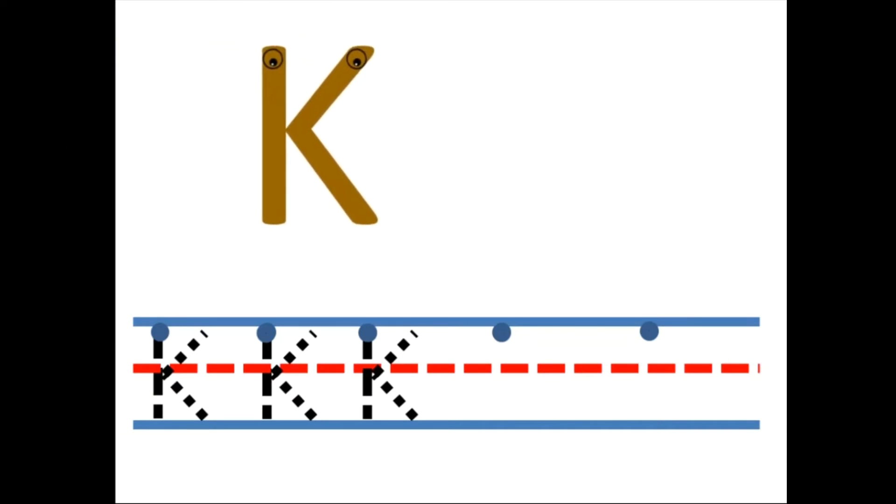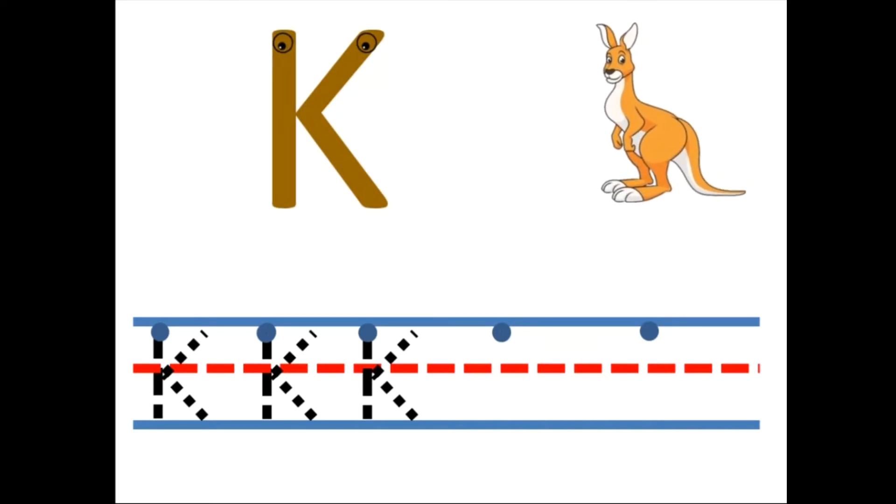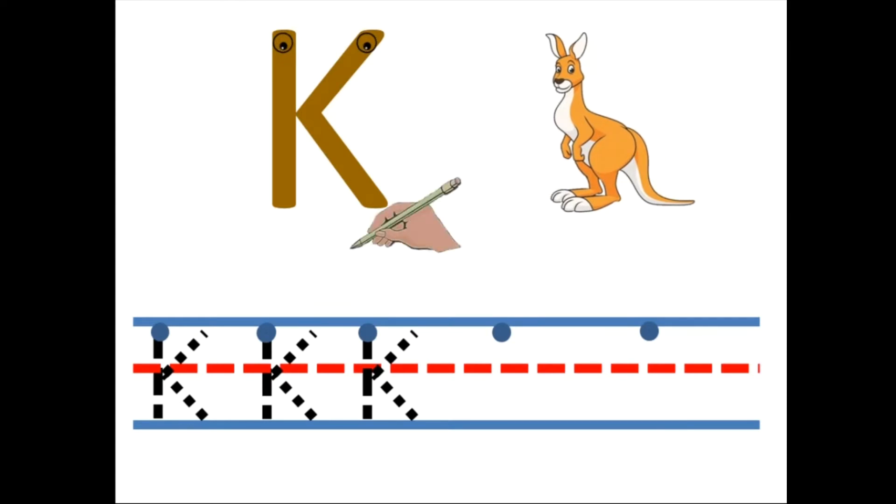Hello, I am the uppercase letter K, and today you're gonna practice how to write me. But before, let's see. I am K for kangaroo. Yeah, now grab your pencil and let's trace some K. Good, straight line down.